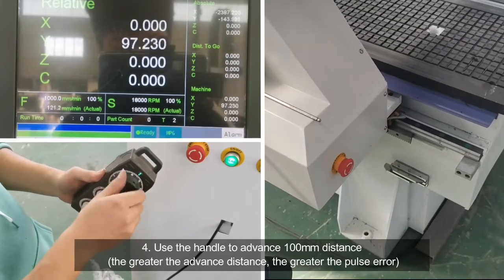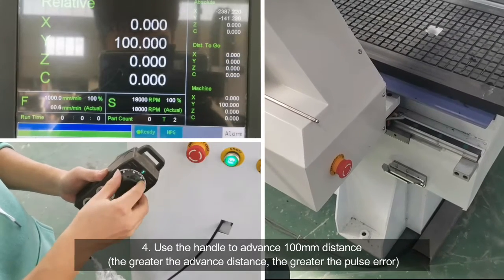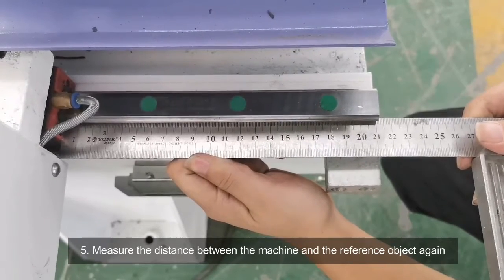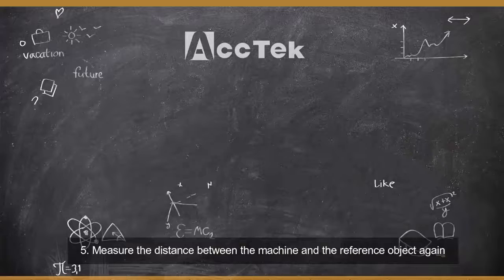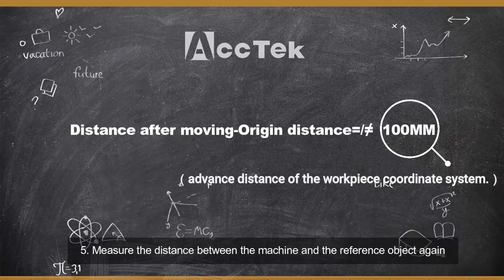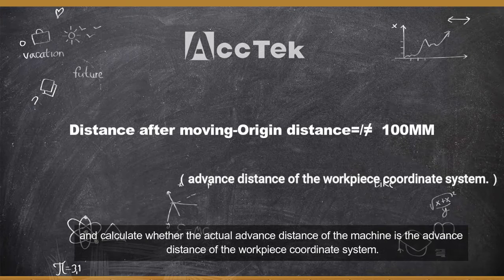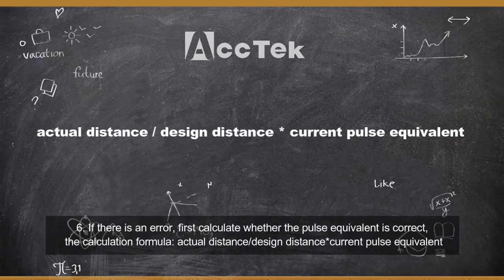The greater the advance distance, the greater the pause error. Fifth, measure the distance between the machine and the reference object again, and calculate whether the actual advance distance of the machine matches the advance distance of the workpiece coordinate system. Sixth, if there is an error, first calculate whether the pause equivalent is correct.